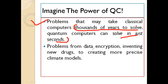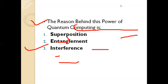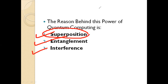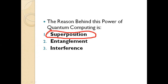Problems from data encryption to inventing new drugs to creating more precise climate models — these types of problems can be solved and optimistic models designed within a very short period of time using quantum computers. With a classical computer that may obviously take a much longer duration. The reason behind this is three concepts related to quantum computation: the first one is superposition. If you understand superposition, you already understand the parallelism power of quantum computation.